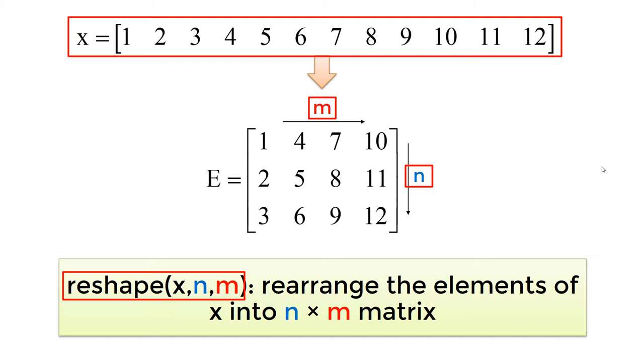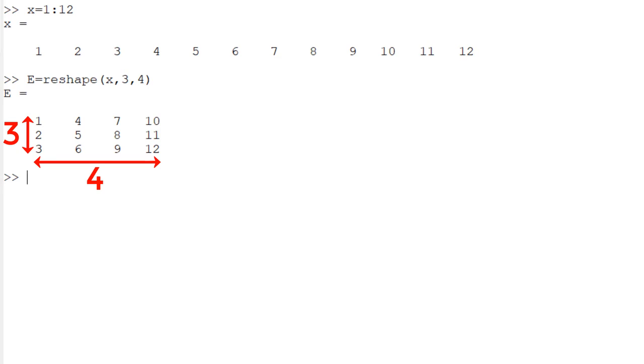For example, you can create matrix E by creating a row vector x from 1 through 12 and then rearrange it into the 3 by 4 matrix using the reshape function. I create x 1 through 12 as a row vector and then reshape them. I start with x and then row size 3 followed by column size 4. The total number of elements of the reshaped matrix should be the same as before.